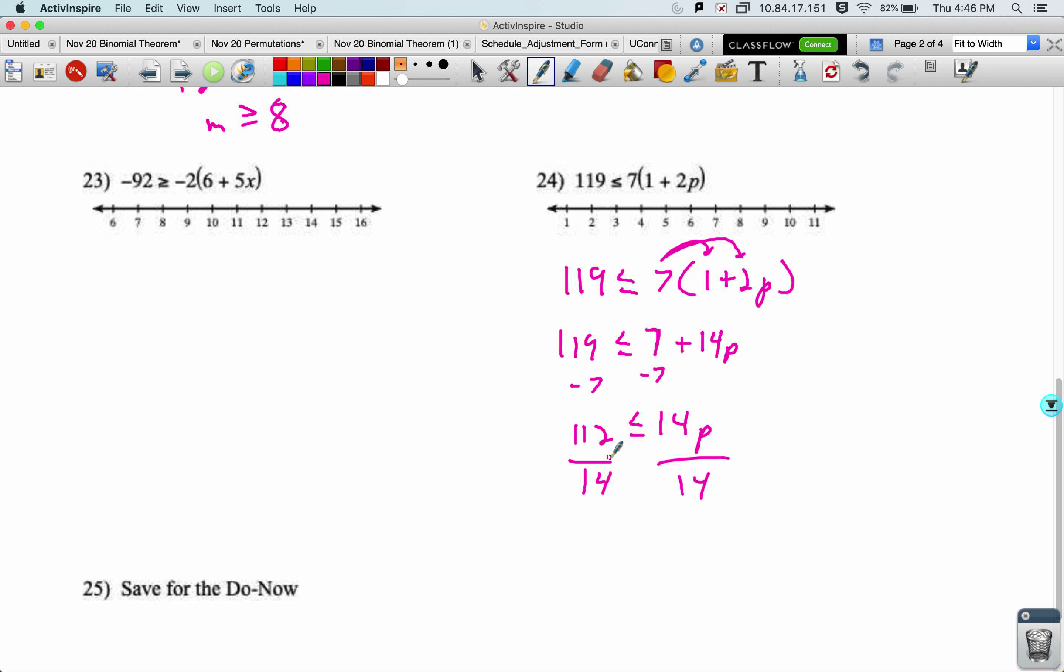112 divided by 14 is 8. It's less than or equal to p. p is greater than or equal to 8. Closed dot at 8. Here we're coming this way. All right.